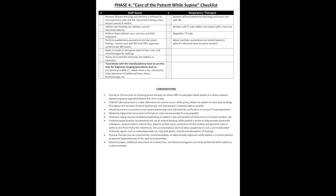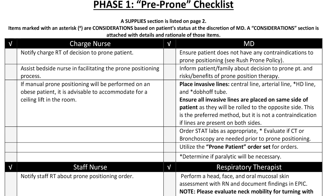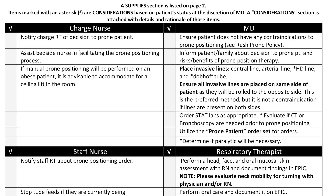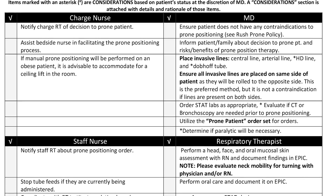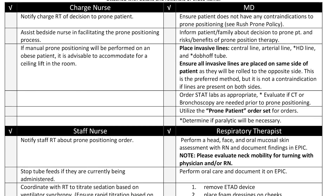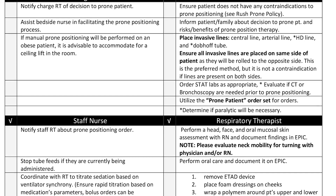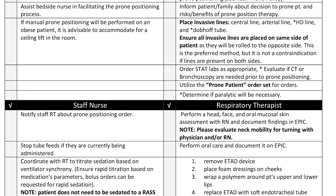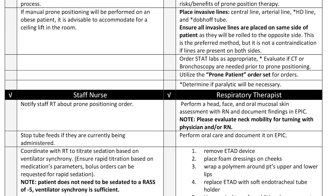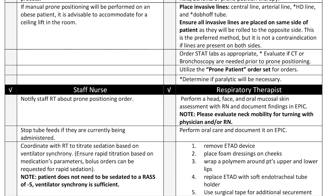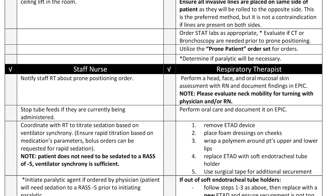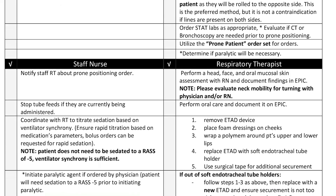The main items to highlight from this checklist are ensuring the invasive lines are placed on the same side of the patient. This is not a contraindication in the event that the lines are on opposite sides, but lines on one side is the preferred method. In the event invasive lines are on opposite sides, the central line takes precedence over the arterial line. This will be explained later in the video.